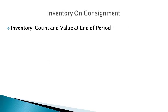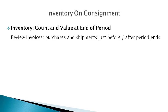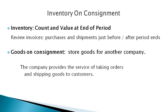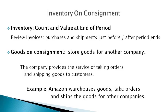Inventory in the warehouse is counted and valued at the end of the period. The initial valuation only includes inventory in the warehouse. The accountant must review invoices of purchases and shipments just before and after a period ends to determine if an adjustment to inventory is necessary for goods that are in transit. Goods on consignment are not legally owned by the company storing the goods and should not be reported as inventory for that company. Goods on consignment is common when one company owns the inventory and another company provides the service of taking orders and shipping goods to customers.